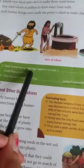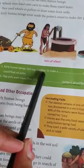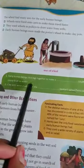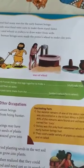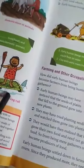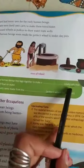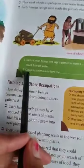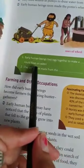Early human beings tied logs together to make a blank that could float on water. Logs yani ki bhoat sari lakadi ek saath tie karke unhohunne raft banaya. So, early human beings tied logs together to make a raft that could float on water.